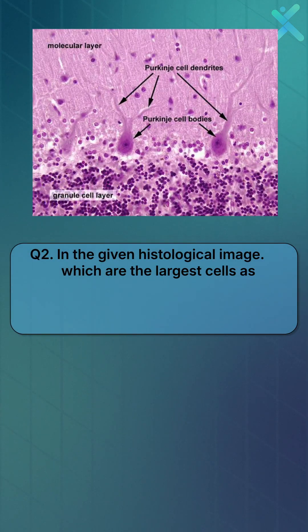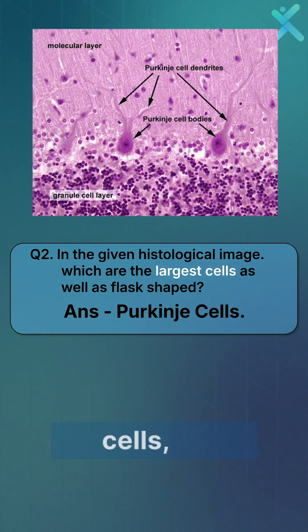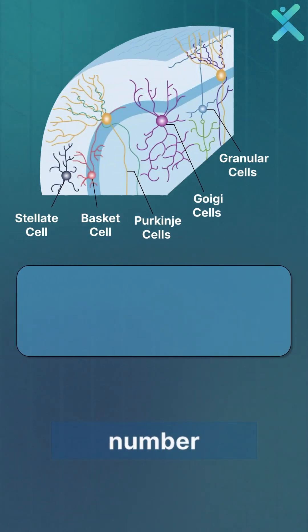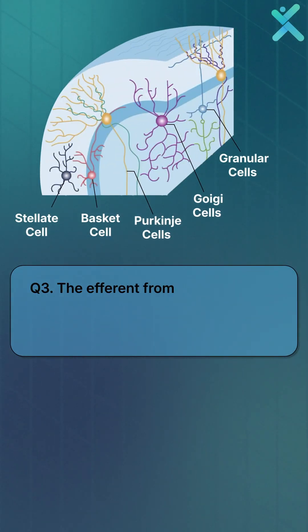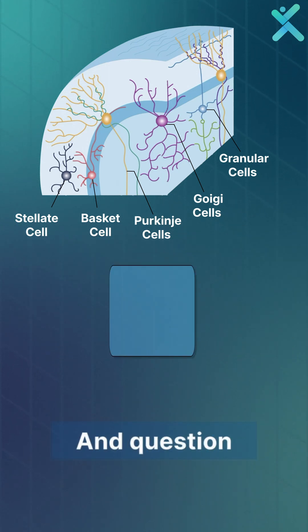Question number two: in a given histological image, you should always be able to identify Purkinje cells, which are the largest cells and are flask-shaped. Question number three: the efferent from the cerebellar cortex is the Purkinje cell.